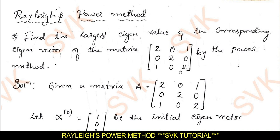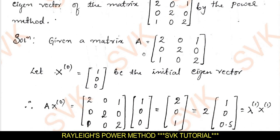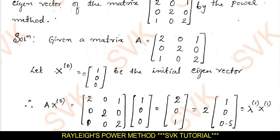Now, I am going to explain that method. Consider the initial eigenvector — we consider the initial eigenvector as [1, 0, 0], a column matrix. Or else you can consider [0, 1, 0] or [0, 0, 1], or also [1, 0, 1]. Such a matrix can be considered to find the largest eigenvalue and eigenvector. The procedure is: first consider the given matrix and multiply it with the initial eigenvector, which is Ax₀.